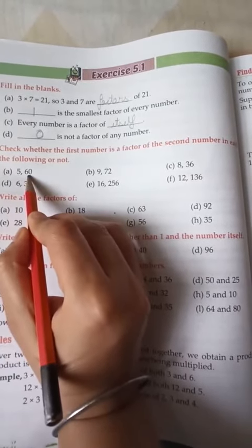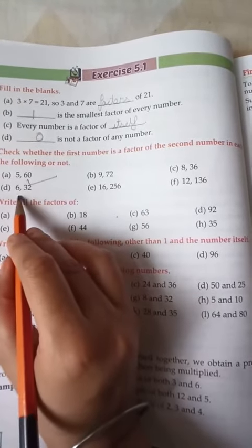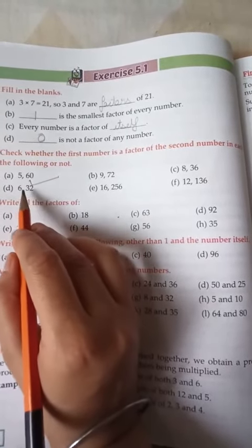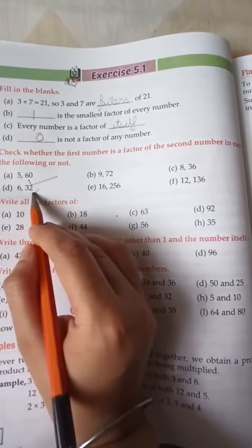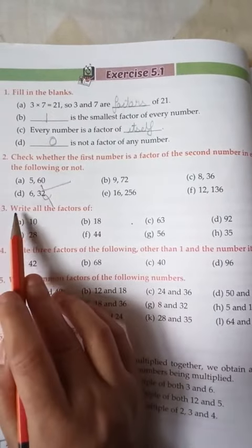It will be right. Okay, now take number 6 and 32. 32 will not be divided by 6, so it is not the factor. Understood?